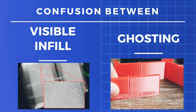People sometimes consider the visible infill as a ghosting problem in 3D printing. What's the difference then? Visible infill mainly occurs when the wall is quite thin, and even under-extrusion may also cause visible infill in 3D printing. I suggest you look for the pattern on the surface — in the case of ghosting, you will find lines or ripples clearly visible from the outside.